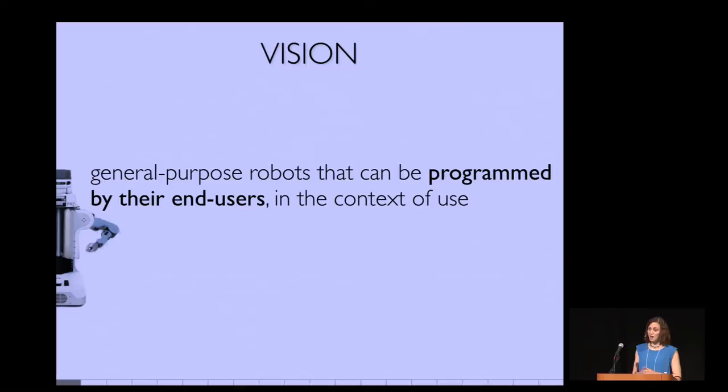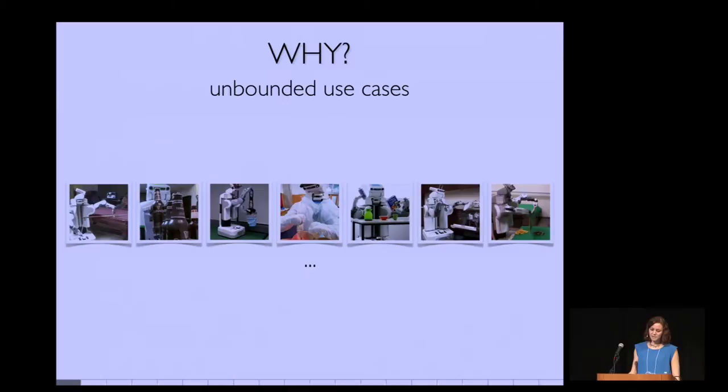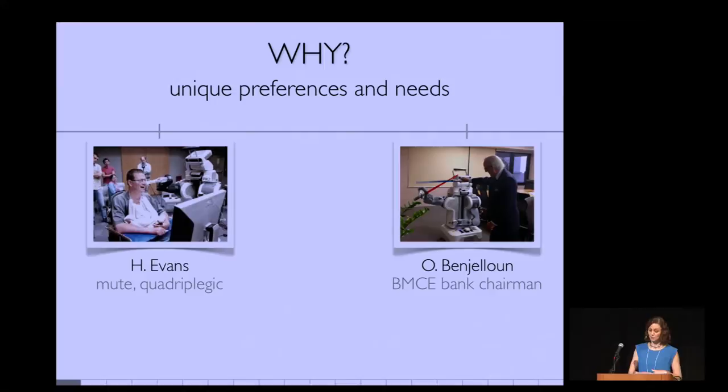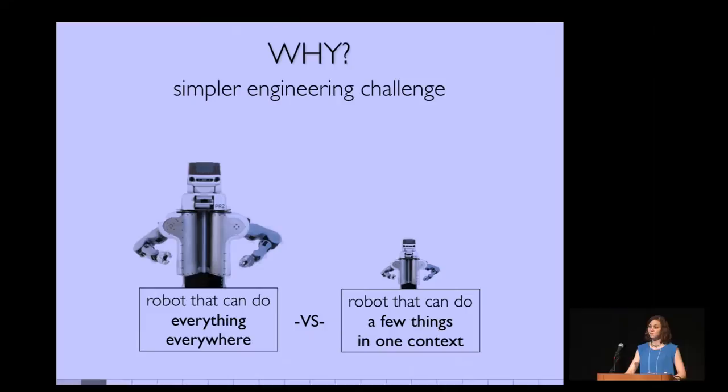Our work is motivated by the idea of general-purpose robots that can be programmed by their end users in the context of use, so after they've been deployed. Why are we interested in this? Well, firstly, we don't want to limit what these robots will do for people. If someone has a creative way they can use these robots, we just want to let them do that. And secondly, we don't want to restrict how these things are done. So even if we can be sure that a certain functionality is very desirable for a large population, every user will have certain preferences about how they want things done.